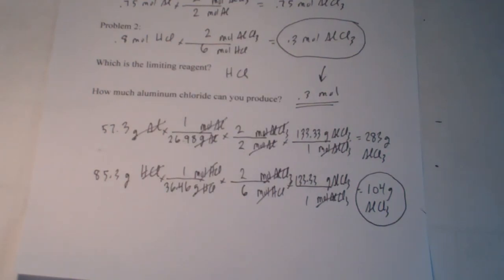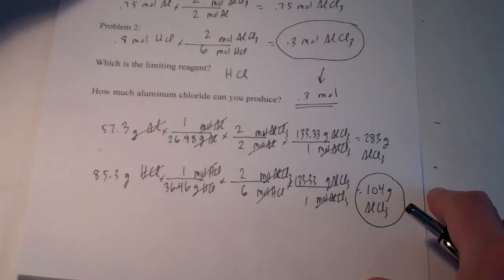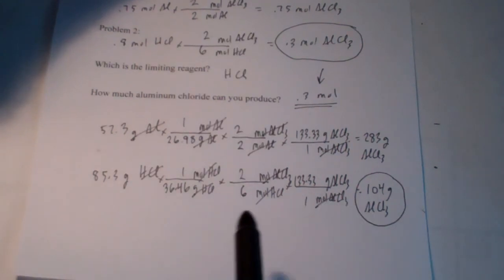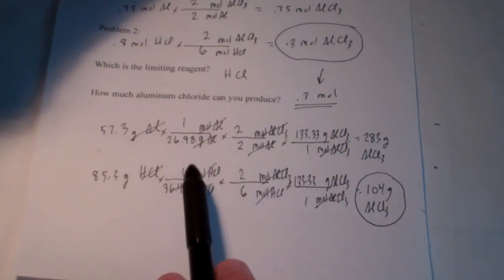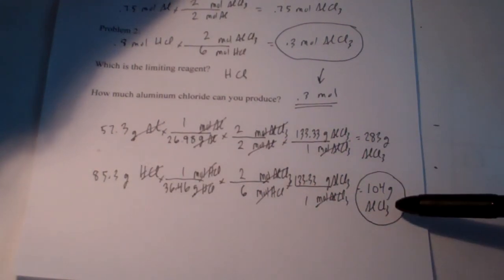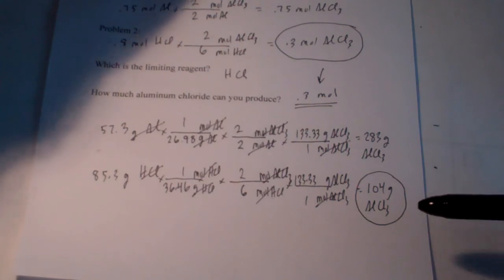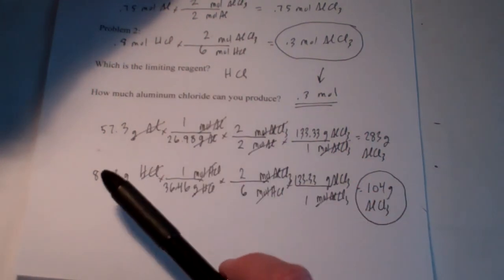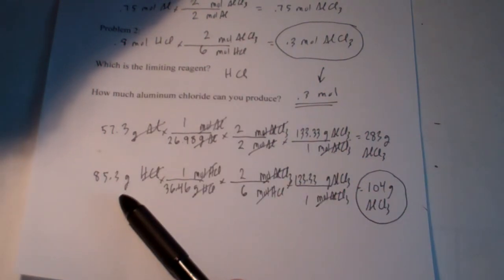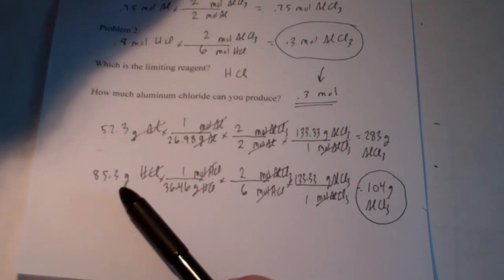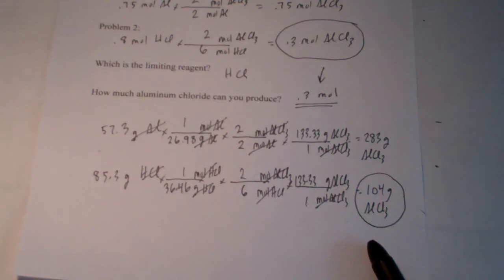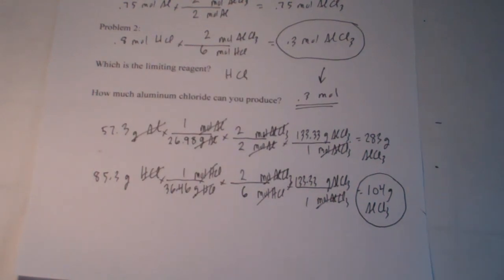So there you have it — limiting reactants. You do the stoichiometry twice and pick the one that produces the least amount of product. Keep in mind, it is not necessarily the reactant that you have the least of — it is the one that can make the least amount of product.